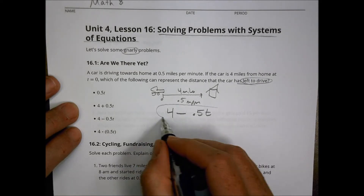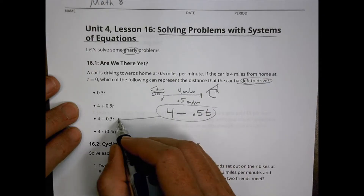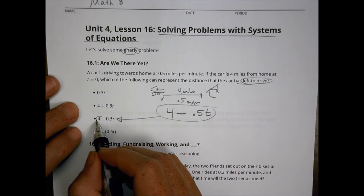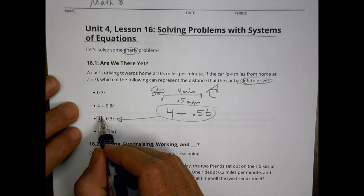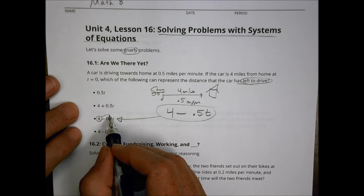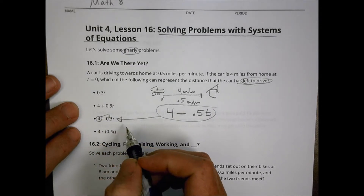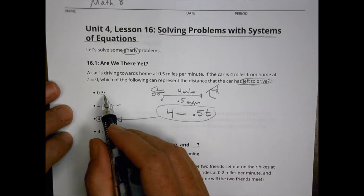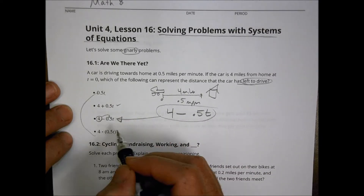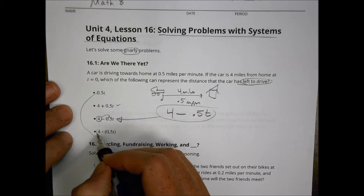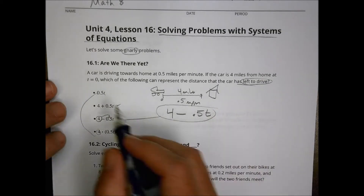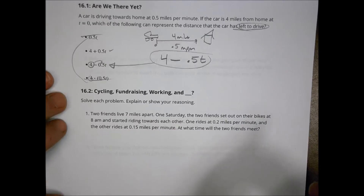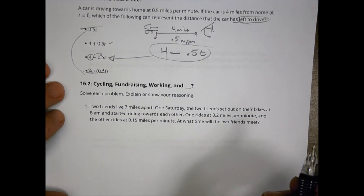Writing it out this way, I can see that my one solution is going to be right here, because I'm going to start four miles away and be decreasing a little bit every minute that I'm driving. Let's solve these problems and explain and show your reasoning.